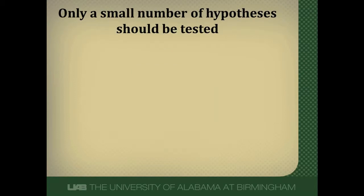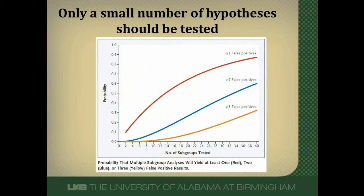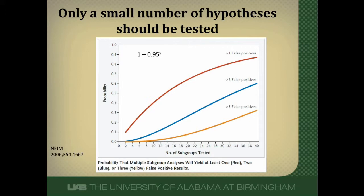Researchers shouldn't do lots and lots of subgroup analyses — only a small number of hypotheses should be tested. This figure from the New England Journal of Medicine demonstrates why. This editorial looked at the probability of a false positive finding based on the number of subgroups tested. Focusing on the red line — at least one false positive — if you do just 10 subgroup analyses, you have about a 40% chance of finding at least one that is a false positive rather than a true positive. This formula can help you calculate the chances of a false positive, where X is the number of tests run. The more hypotheses tested, the greater the false positive rate, and I go through this in greater detail in a later video.